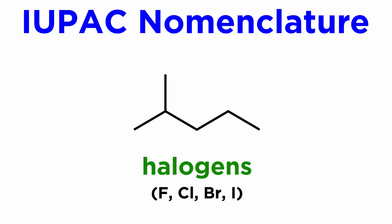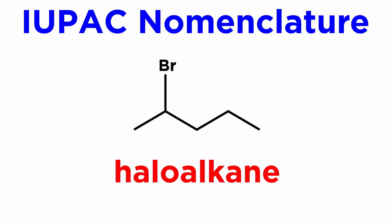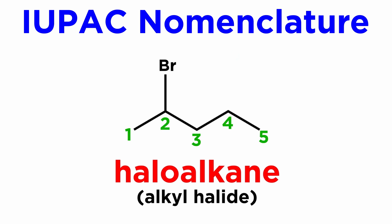We will encounter halogens frequently in organic chemistry, and when an alkane has one or more halogens on it, we will refer to it as a haloalkane, or equivalently an alkyl halide. The good news is that we will treat these essentially just like alkyl substituents. We will number the parent chain so as to give the first substituent occurring soonest, whether alkyl or halo.